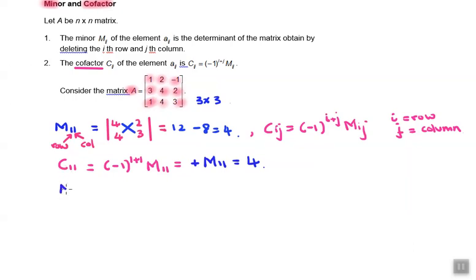Let's try another minor, minor M32. So first block row 3, row 3, and then block second column.